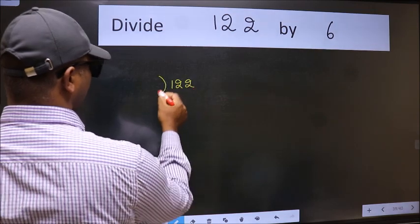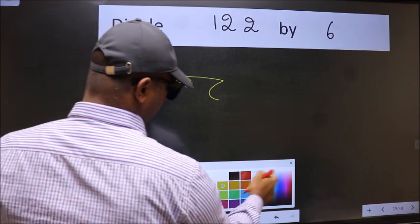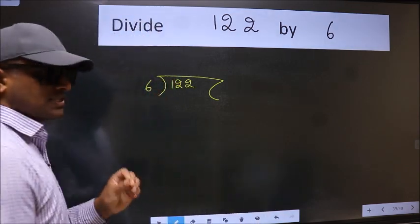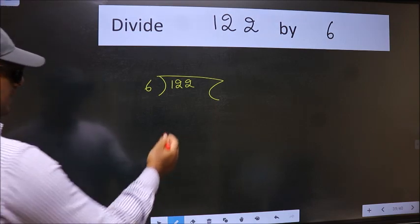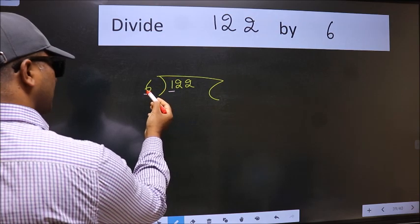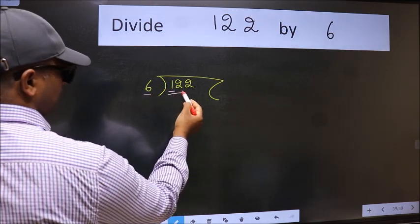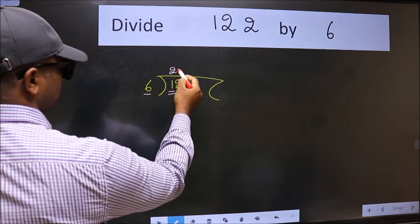122 here and 6 here. This is your step 1. Next, here we have 1 and here 6. 1 is smaller than 6, so take 2 numbers: 12. When do we get 12 in the 6 table? 6 times 2 is 12.